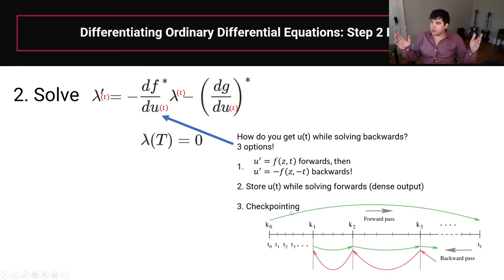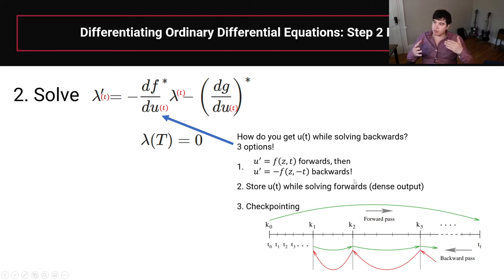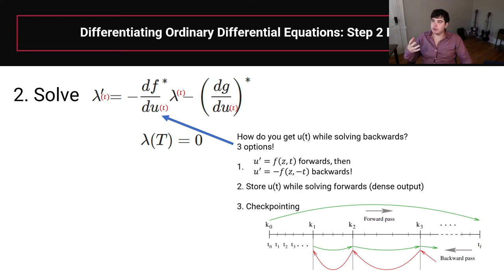A third option is checkpointing — solve forward, save a few checkpoint points, and as you go backwards, re-solve small intervals as needed. This is a mixture of the two approaches: less memory intensive than storing everything, but requires more compute. There's a fundamental trade-off between memory and compute performance depending on which option you choose.